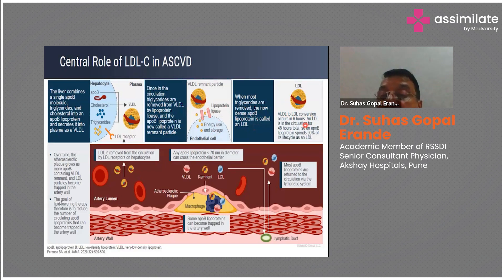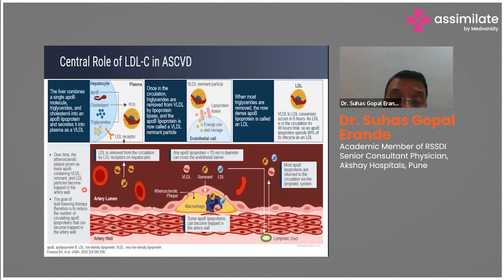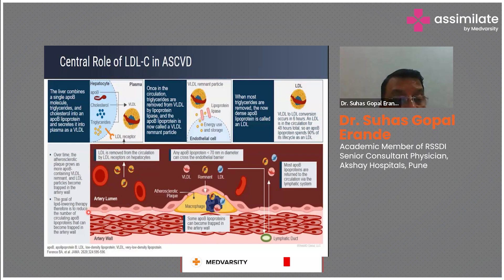VLDL to LDL conversion occurs in just six hours, and LDL remains in circulation for 48 hours total — meaning an ApoB lipoprotein spends 90% of its life cycle as LDL. In the artery, atherosclerotic plaque grows as more ApoB-containing VLDL remnant and LDL particles become trapped in the arterial wall. The smaller the particle size, the more likely it is to pierce the space between two endothelial cells and enter the vessel wall.